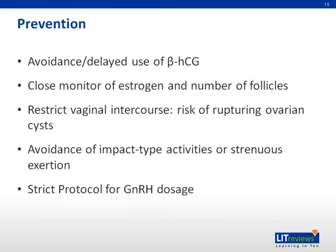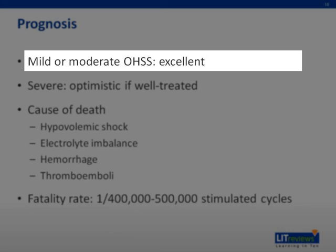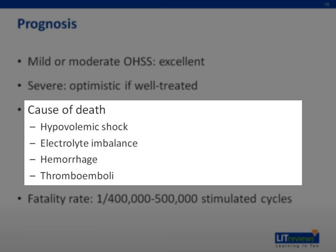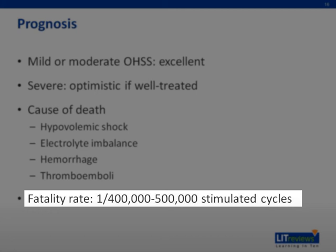The prognosis is excellent if ovarian hyperstimulation syndrome is mild or moderate. In severe OHSS, the prognosis is optimistic if good treatment is given. Hypercoagulability may endanger the patient. Death from OHSS is largely due to hypovolemic shock, electrolyte imbalance, hemorrhage, and thromboemboli. Estimated fatality rates are 1 per 400,000 to 500,000 stimulated cycles.